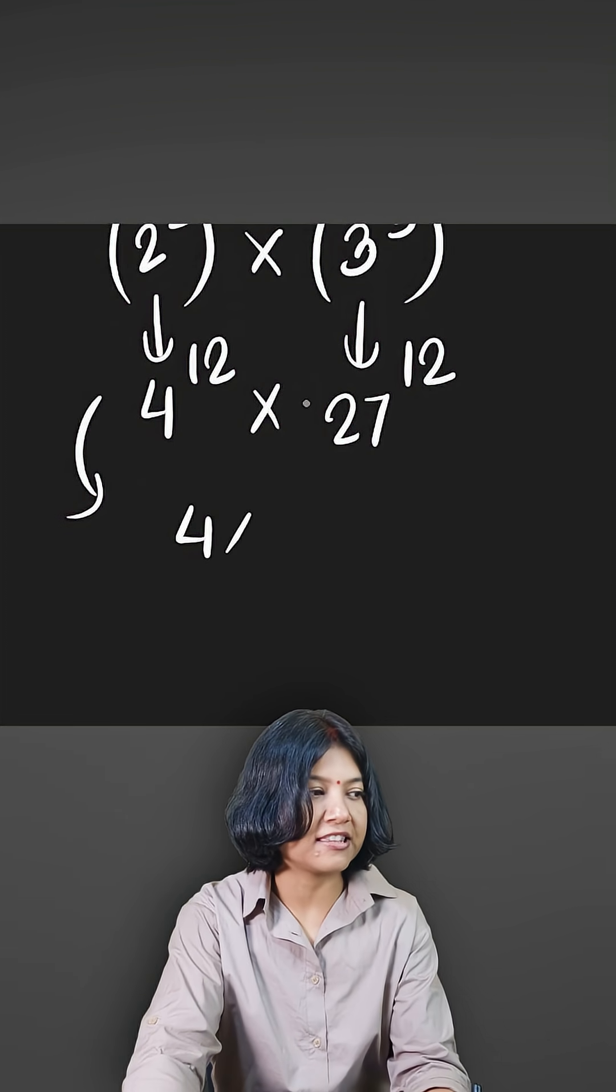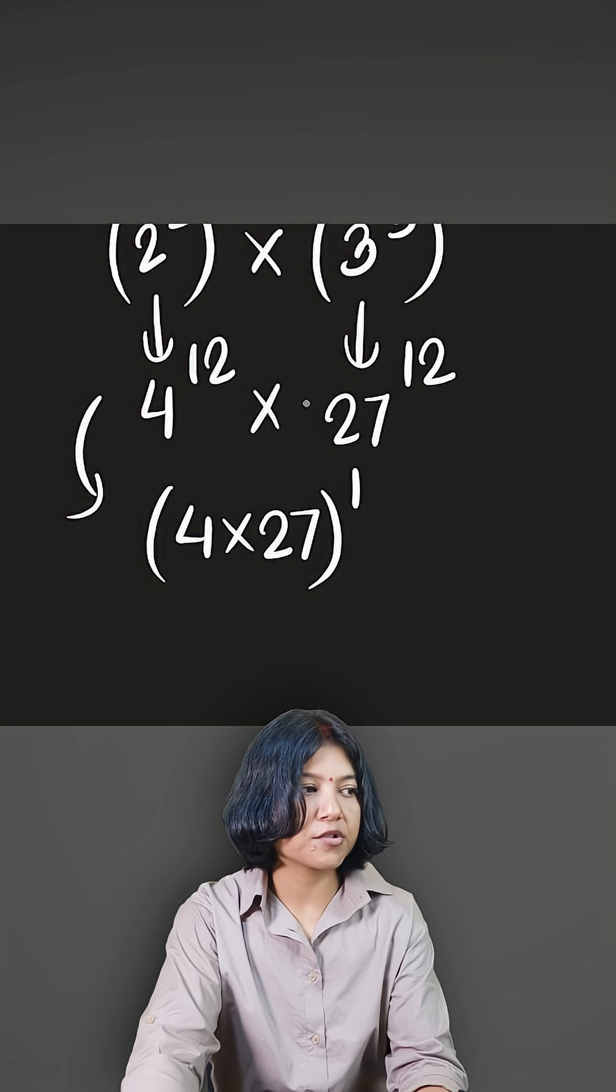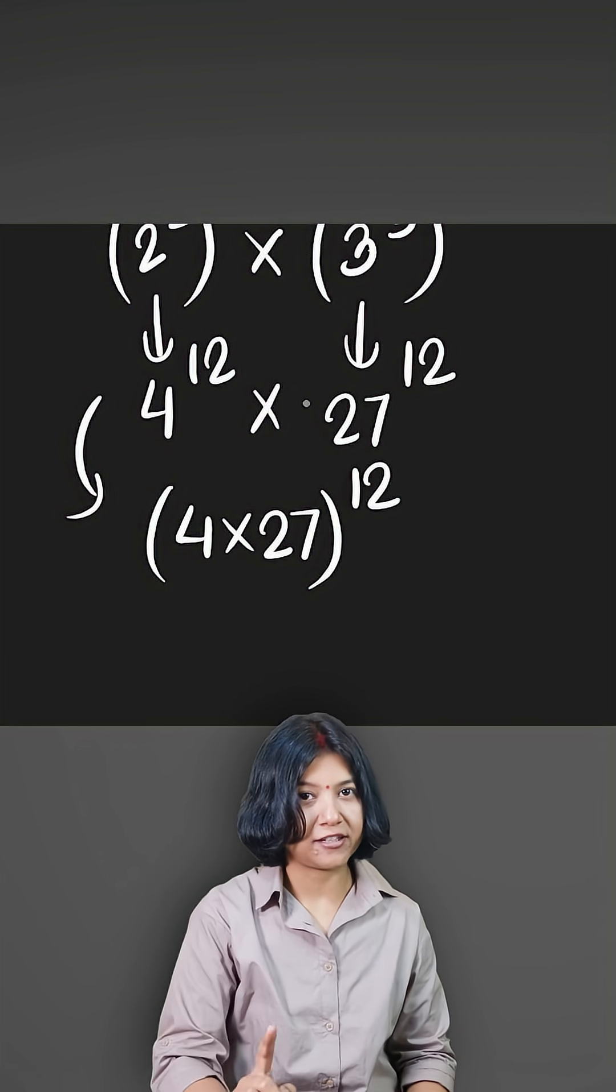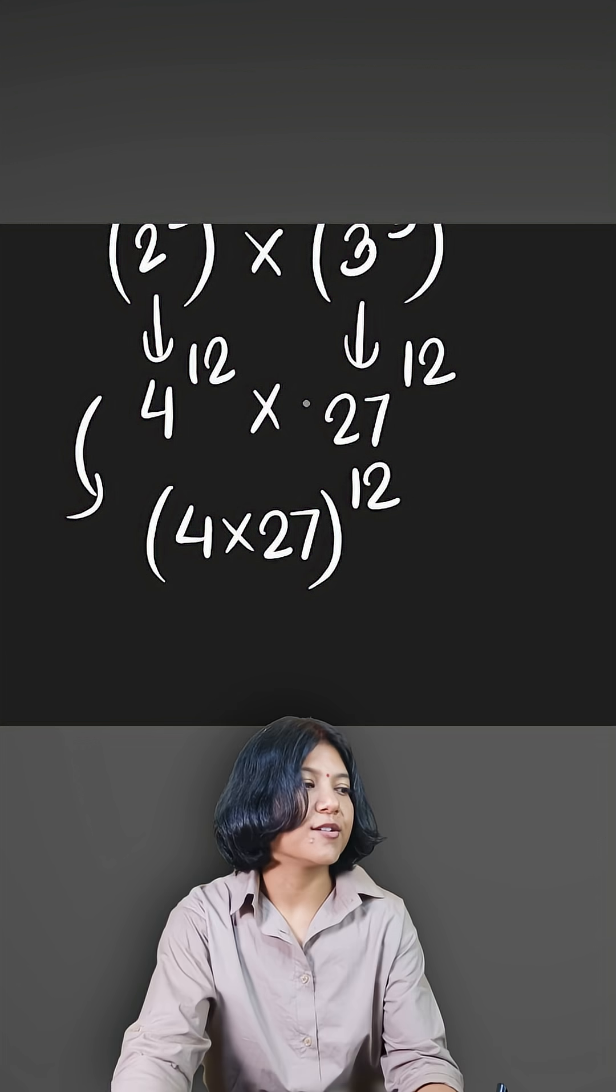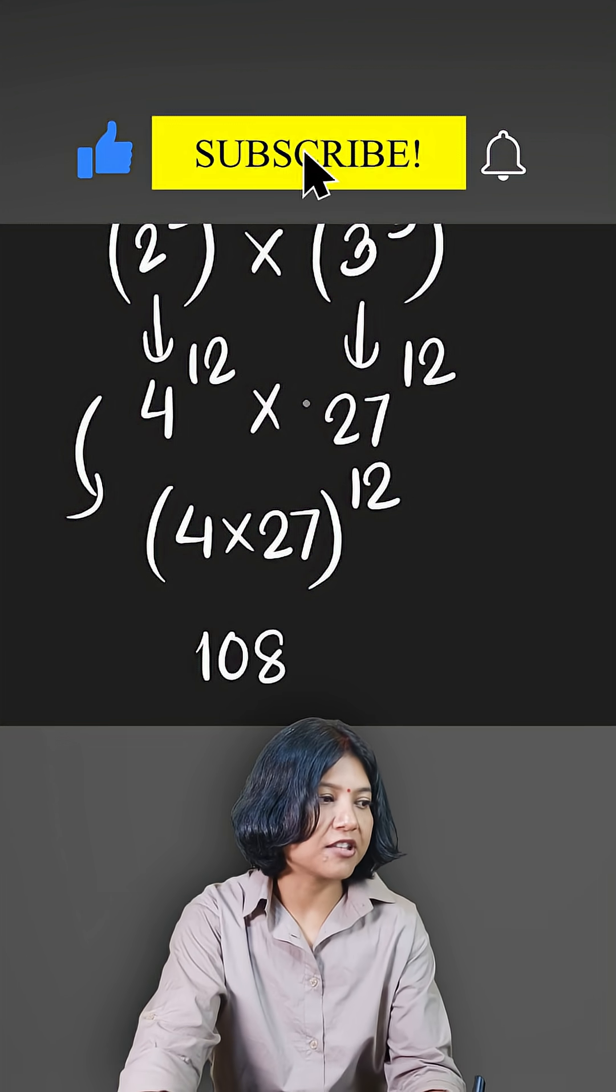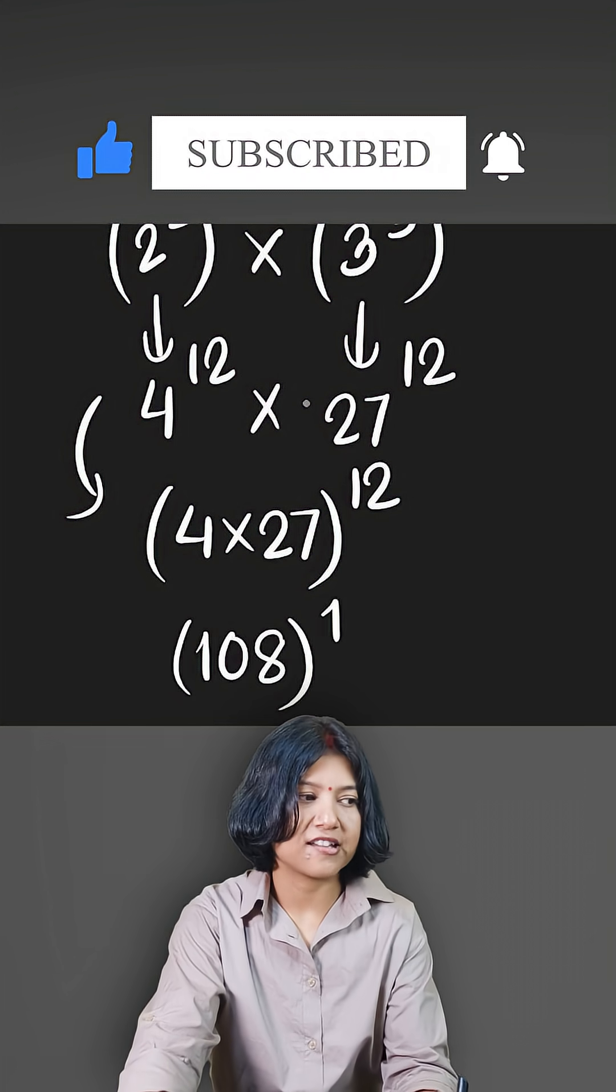Remember, you do this only when your terms are multiplying or dividing. Don't ever try this in case of addition or subtraction. So 4 times 27—the answer is pretty simple: it's 108 to the power of 12. That's it.